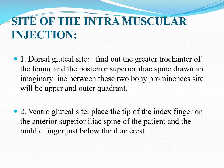Sites of intramuscular injection: 1. Dorsal gluteal site — find the greater trochanter of the femur and the posterior superior iliac spine; draw an imaginary line between these two bony prominences; the site will be the upper and outer quadrant. 2. Ventrogluteal site — place the tip of the index finger on the anterior superior iliac spine and the middle finger just below the iliac crest.